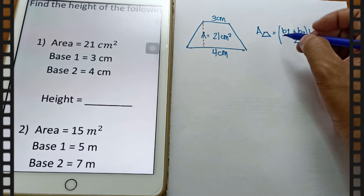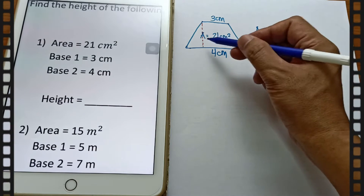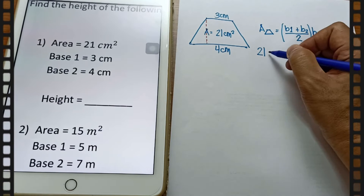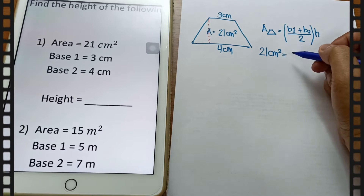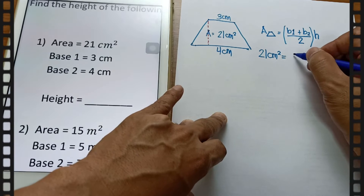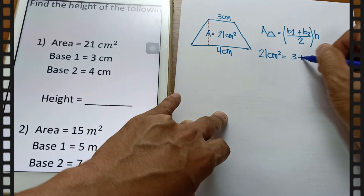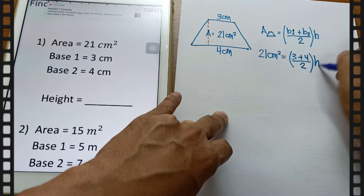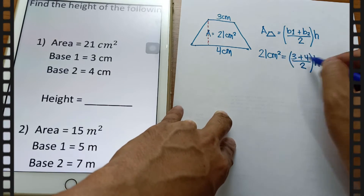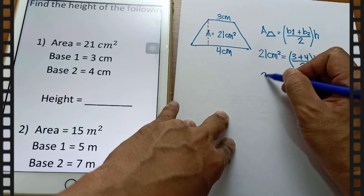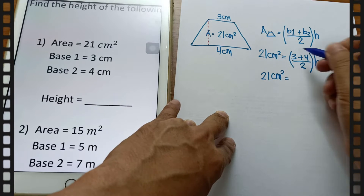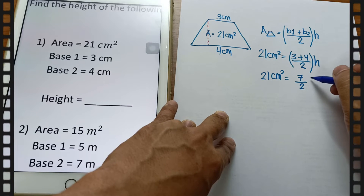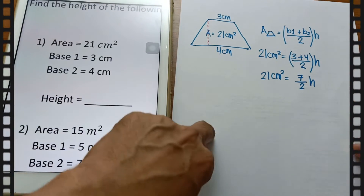In this case, let's substitute. Since the area of this trapezium is 21 cm square, we write: 21 cm square is equal to base one, which is 3, plus base two, which is 4, over 2, times the height. Simplify this part: 3 plus 4 is 7, so we have 7 over 2 times the height.